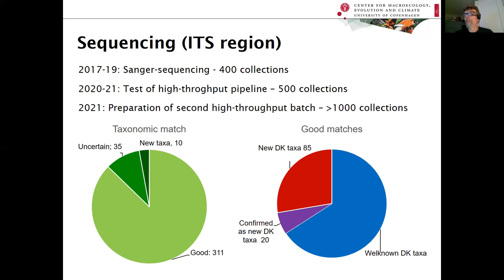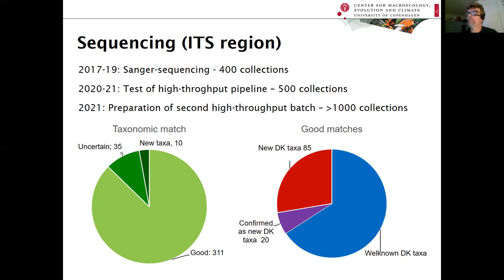From last year, we also started testing a high-throughput pipeline that cuts down the cost of sequencing to a minimum. We are now preparing more than 1,000 collections for sequencing to really boost knowledge about Danish fungal biodiversity.